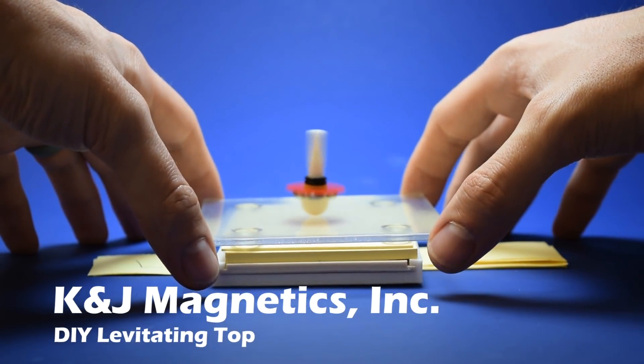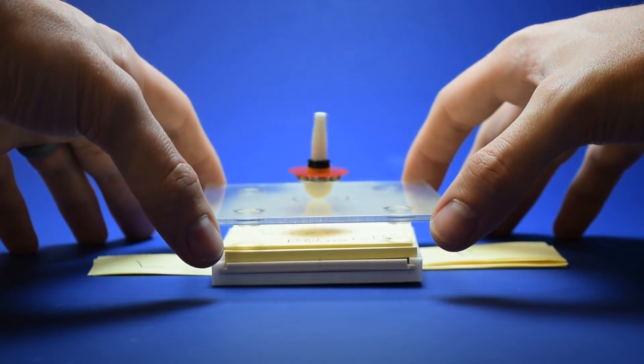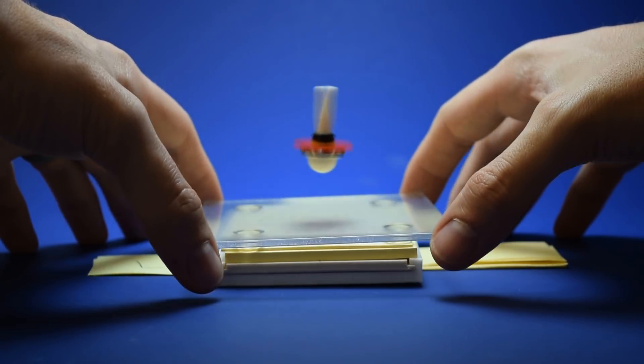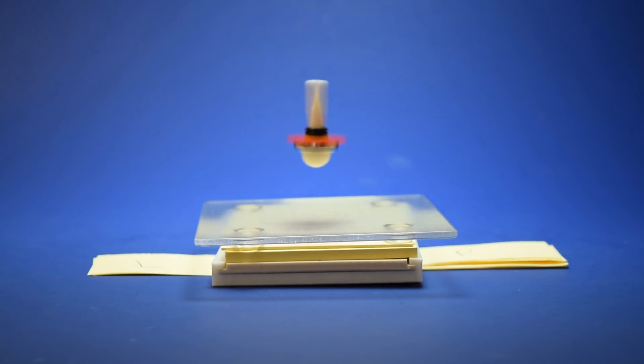Recently, we made this levitating top using some strong neodymium magnets and some 3D printed parts. There's 13 disc magnets that form a ring in the base and there's one ring magnet in the top. And it worked out quite nicely, but we wanted to see if we can make it without a 3D printer. That way you can make it at home.